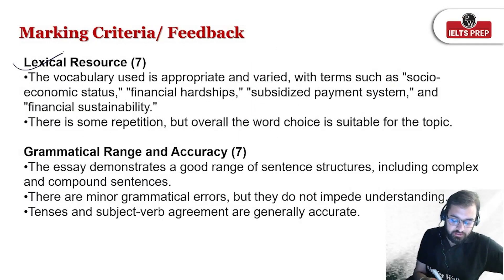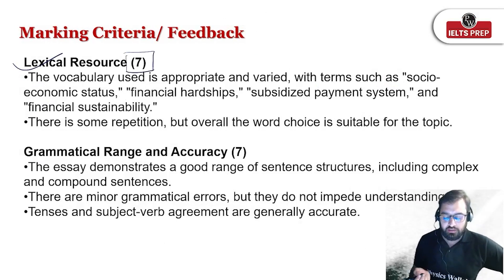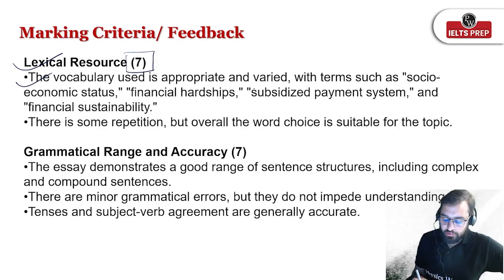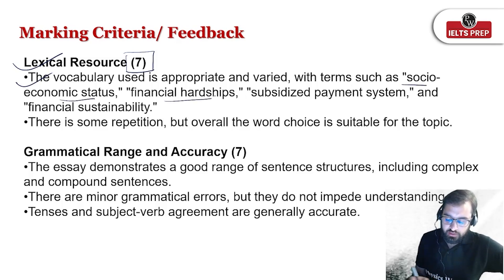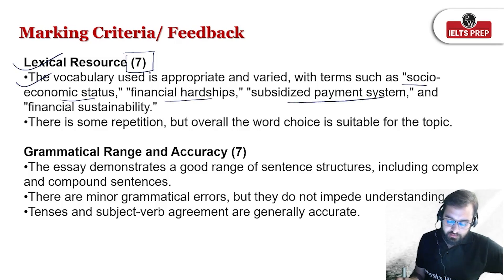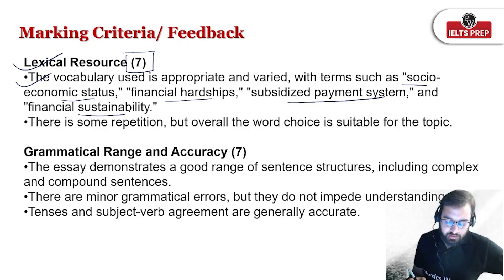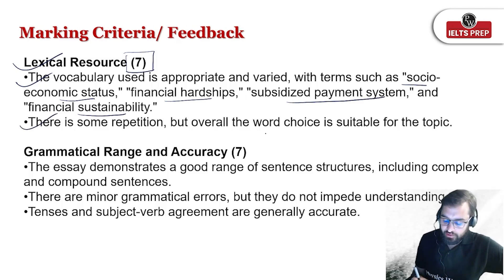As far as lexical resources are concerned, it also seems it could be 7. The vocabulary used is appropriate and varied, with terms such as 'socioeconomic status' — a very good collocation — 'financial hardships' — again a good collocation — 'subsidized payment system', and 'financial sustainability' are some examples of good collocations. There is some repetition but overall the word choice is suitable for the topic.